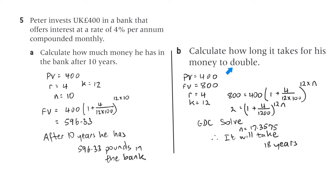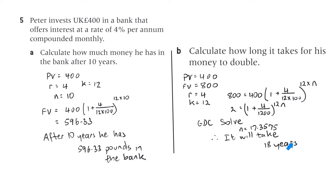Part B: calculate how long it takes for his money to double. The present value is £400, so the future value would be £800 for it to double. R is 4, K is 12 because it's monthly. We put everything in the formula and solve for N using the graphic display calculator's solve function. We get N is 17.3575, so it will take 17.4 years, or rounding up, 18 years.